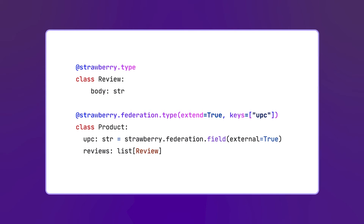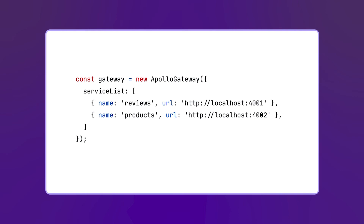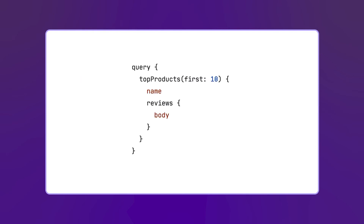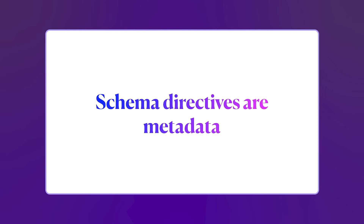Apollo provides a gateway that knows how to combine multiple schemas into one. When the gateway starts, it makes a GraphQL call to each service to fetch the schema, then parses and merges them to make a composed GraphQL schema. In addition to that, it also uses the schema directives defined on the schemas to add information on how to send requests to downstream services. For example, when it receives a query, it knows it needs to first fetch the top products from the product service, and then fetch the reviews for each product from the review service. As you can see, Apollo Federation uses schema directives to gain more information about a schema and its types and fields.